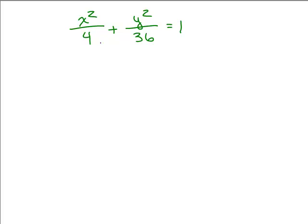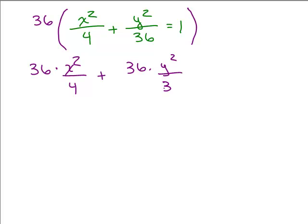Now, you can often, most people what they'll do is just multiply 4 times 36 together. You could do that or you could just multiply it by 36 since 4 happens to go into 36. All right, doesn't work out that way all the time.